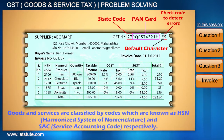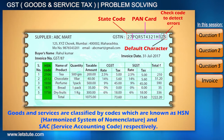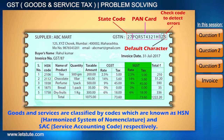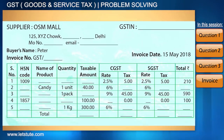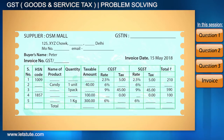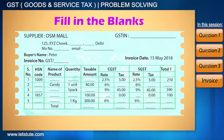Goods and services are classified by codes known as HSN and SAC respectively. There are separate columns for SGST, CGST, GST, and total amount. This is how a GST invoice is made. Before ending this session, try to complete a GST invoice by filling in the blanks.